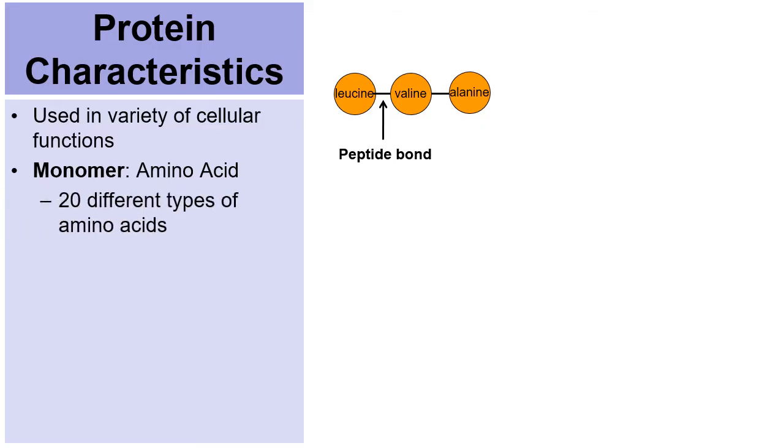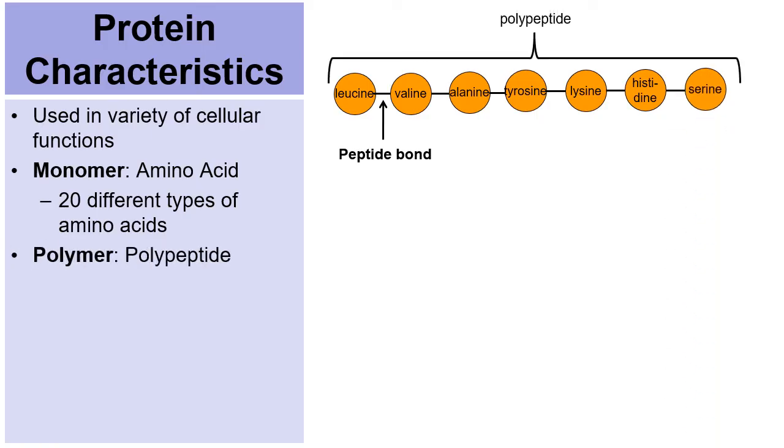And altogether, there's actually 20 different amino acids that exist. Here's another one that's bonded to the chain and another and another and another. And ultimately, you have this chain of amino acids, which goes by the name of a polypeptide.